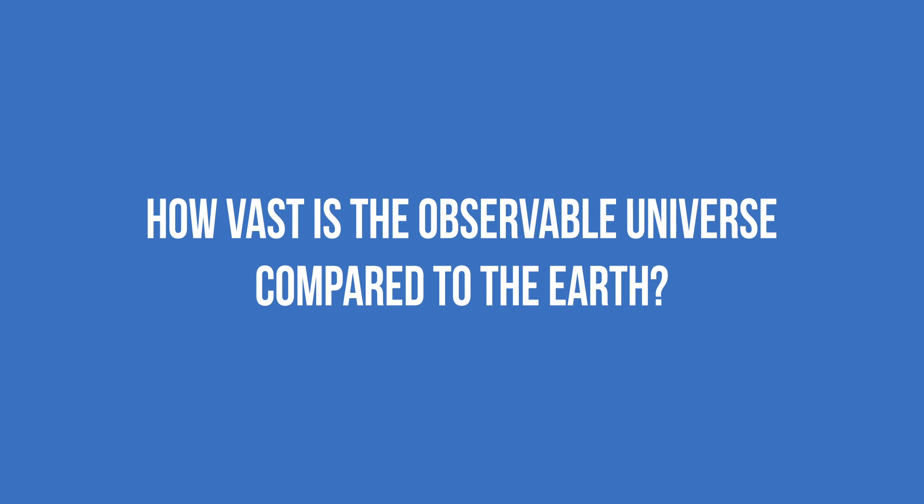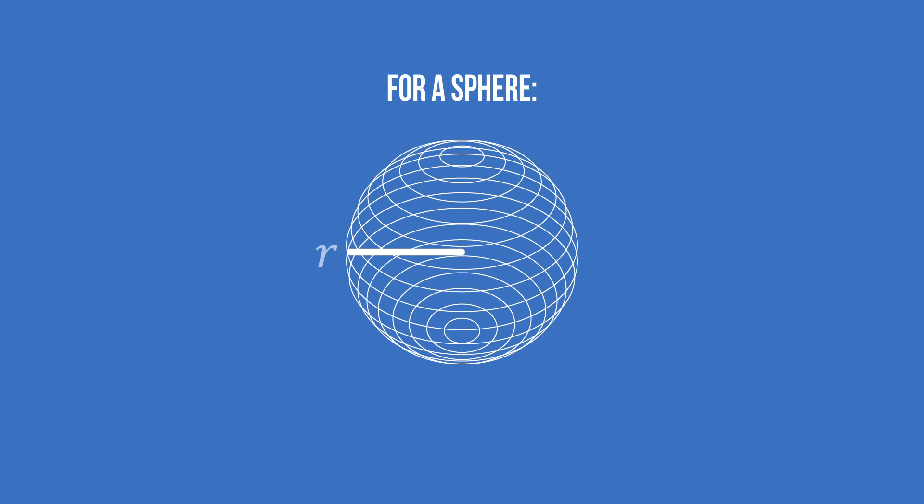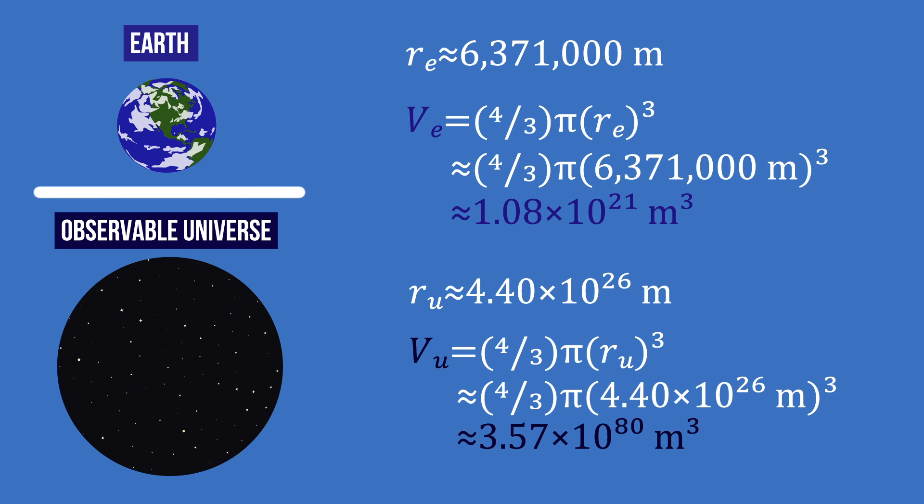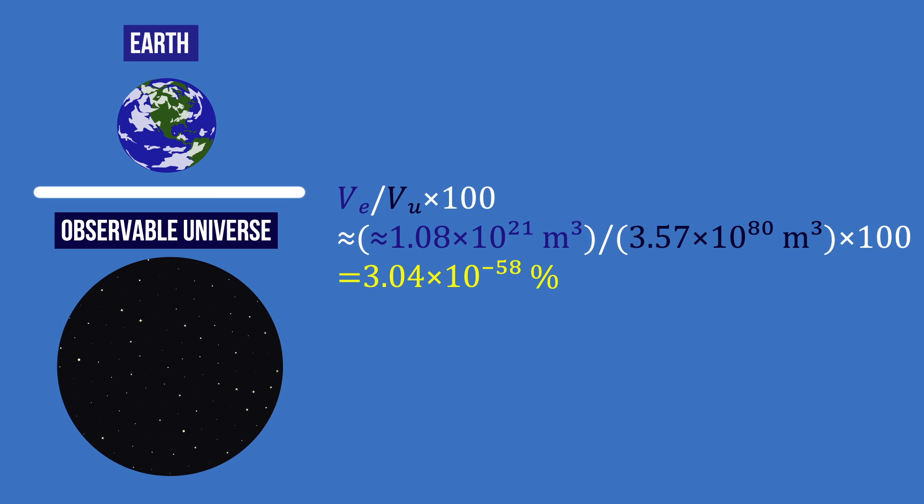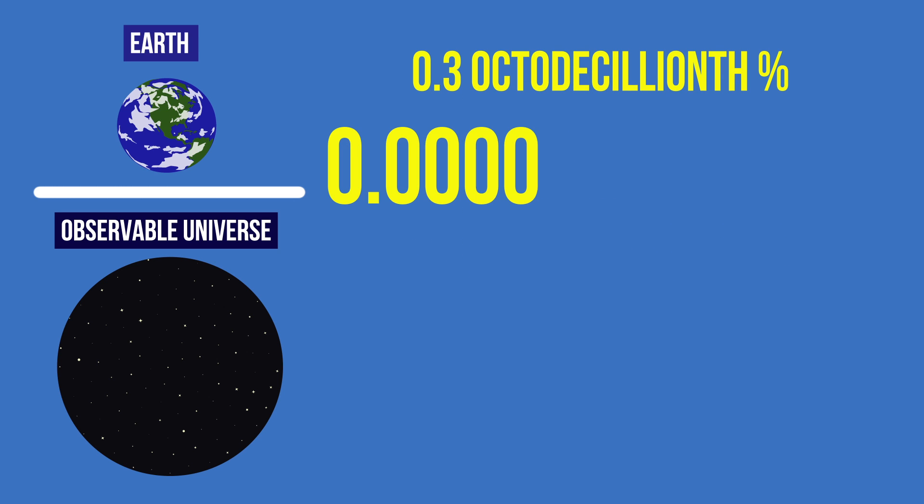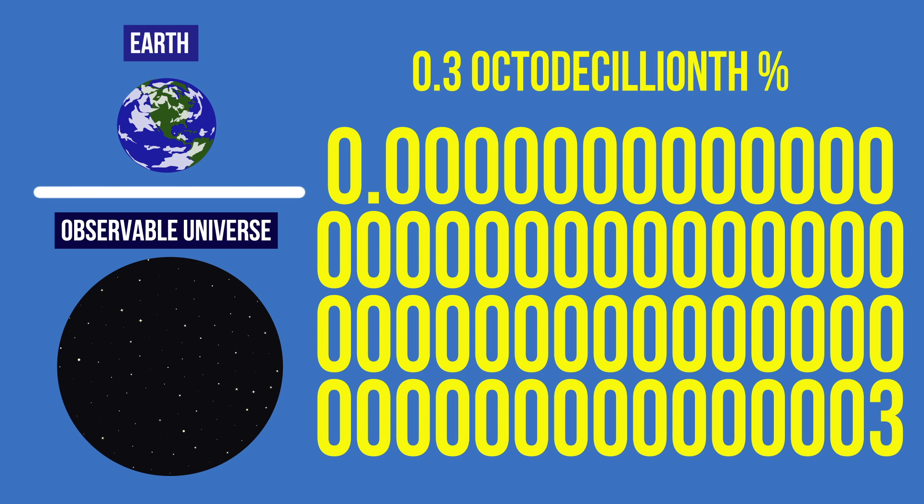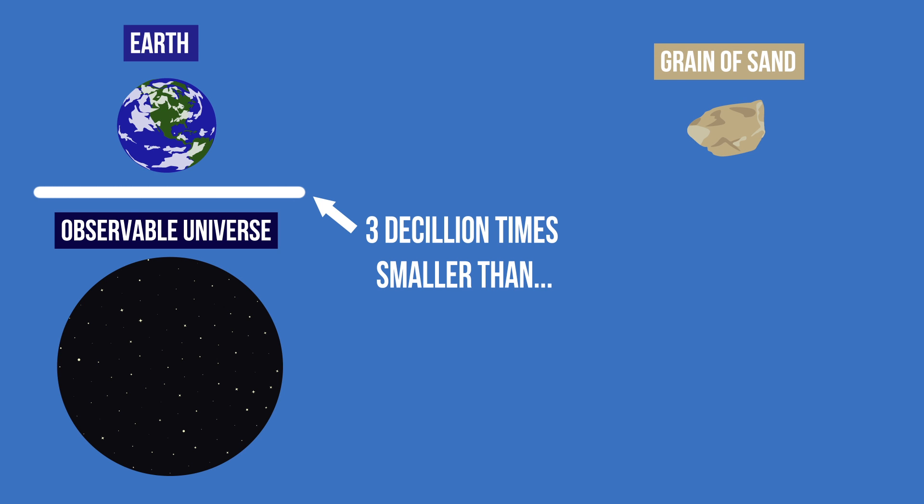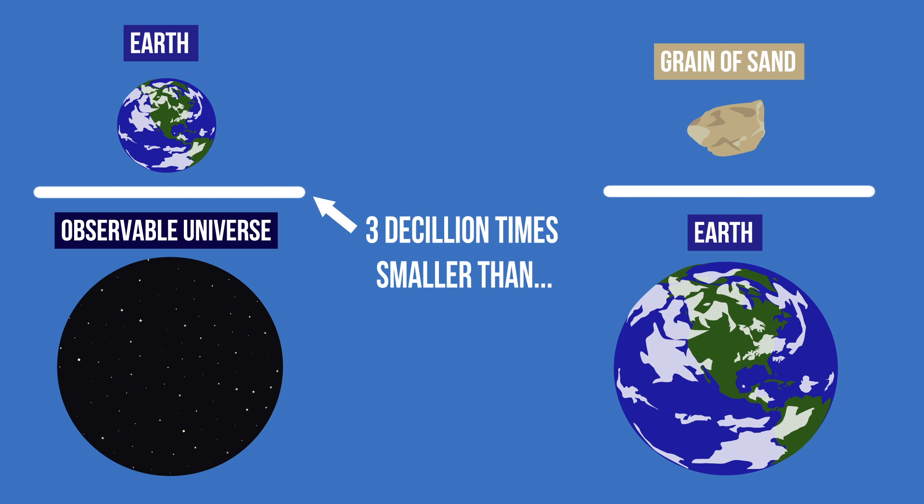But how vast is the observable universe compared to the Earth? Knowing that the volume of a sphere is 4 over 3 times pi times the cube of its radius, we can divide the approximated volume of the Earth by the volume of the observable universe. We found out, without considering the deformation of spacetime and other variables, that Earth represents a mere 0.3 octodecillion percent of the observable universe. I repeat, 0.3 octodecillion percent. That's 57 zeros after the decimal point. This number is even 3 decillion times smaller than the size of a grain of sand compared to the size of the Earth. That puts a lot of things into perspective.